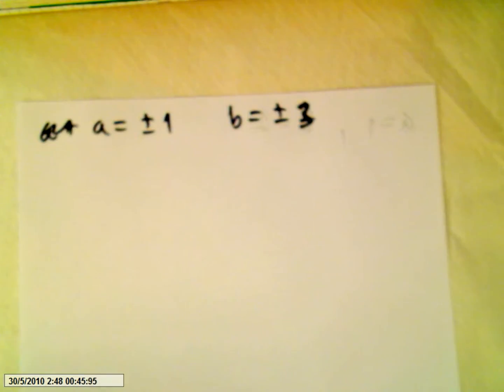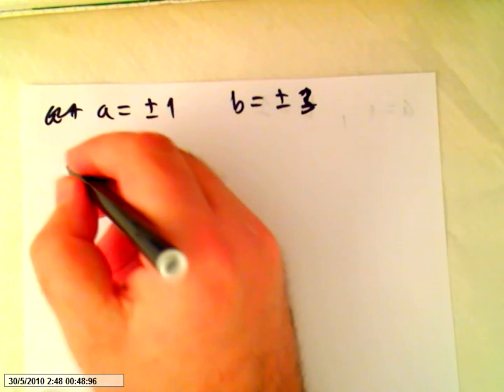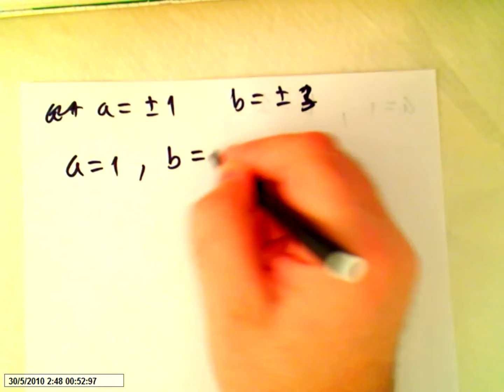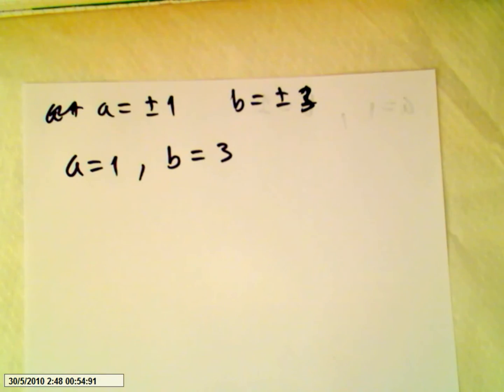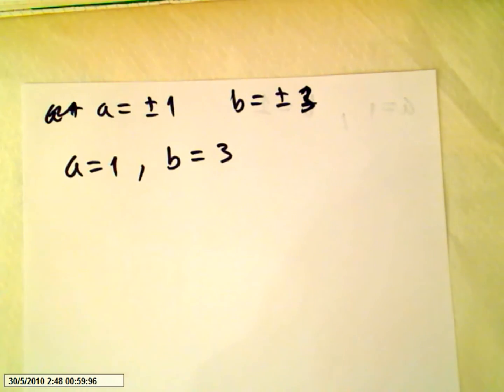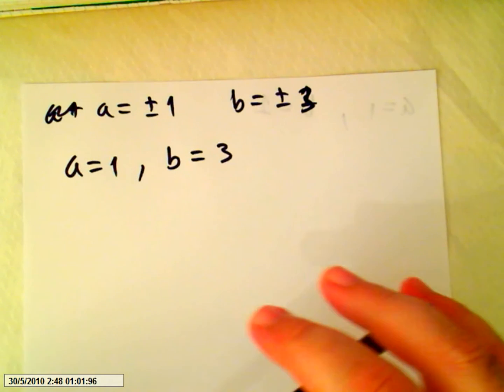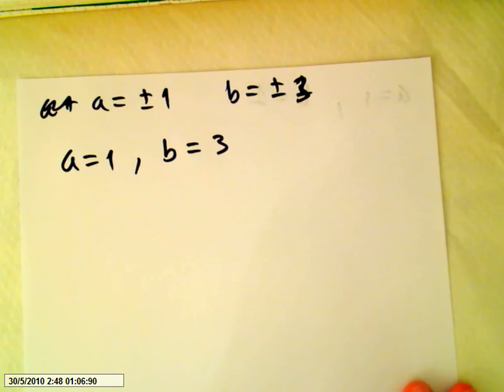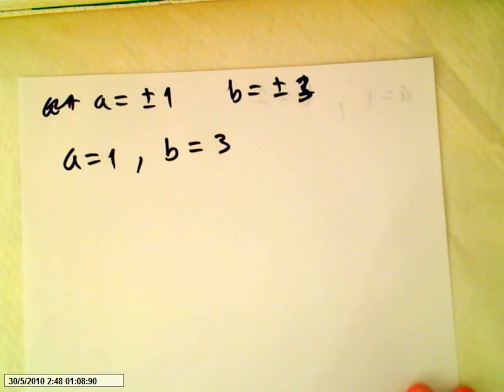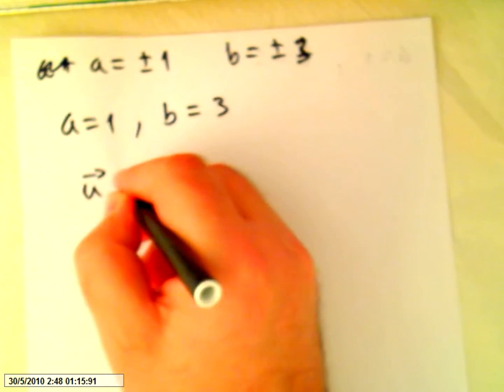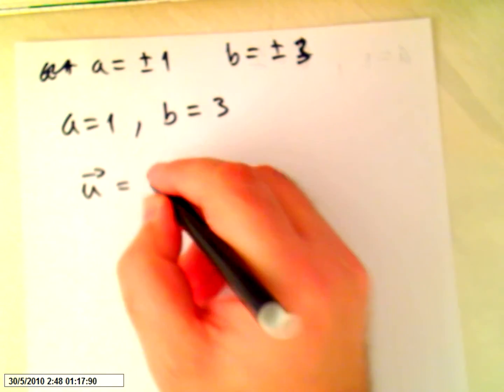So we will choose a equals 1 and b equals 3. Obviously, if we choose minus 1, minus 3, we are choosing the same vector in a different direction, but as the line is concerned, it is exactly the same. So we finally found the vector U will be 1, 3.